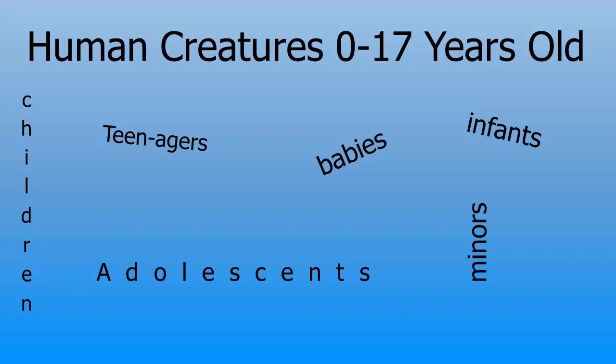Babies? Children? Teenagers? Adolescents? Minors? You can see that these terms are related in describing age 0 to 17 year old humans, but they also have specific meanings and contexts. Teenagers is a commonly used term, but it isn't a scholarly word. If we are searching in a psychology database, adolescence would be the more appropriate term. Minors does the job, but that is used more in law enforcement and related fields.